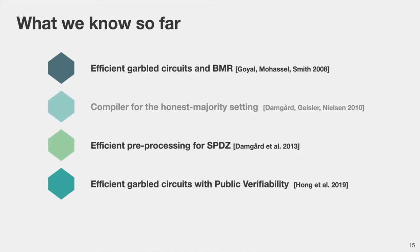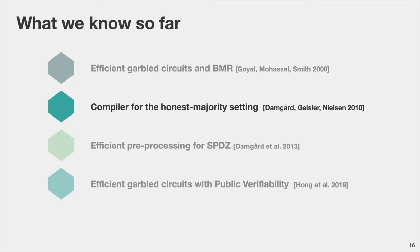Looking at those four results, three provide specific protocols and only one is a generic compiler. There is an advantage to studying compilers: if in the future we find a more efficient passively secure protocol, using a compiler we can potentially immediately obtain a covertly secure protocol with public verifiability. The only existing compiler has disadvantages — it makes specific assumptions about the underlying passively secure protocol and does not work for the two-party case because it requires an honest majority.